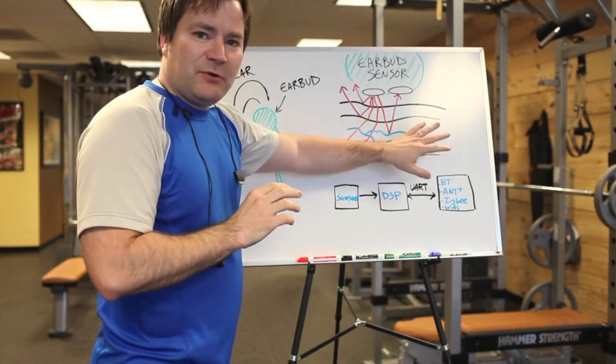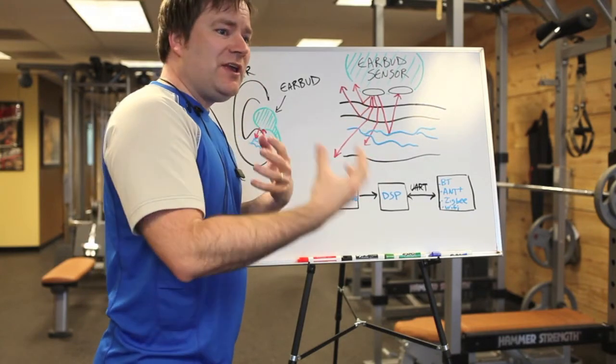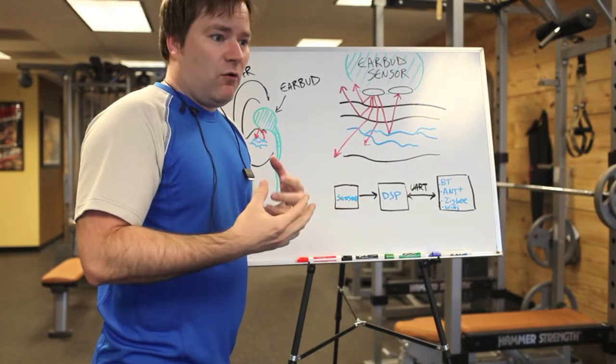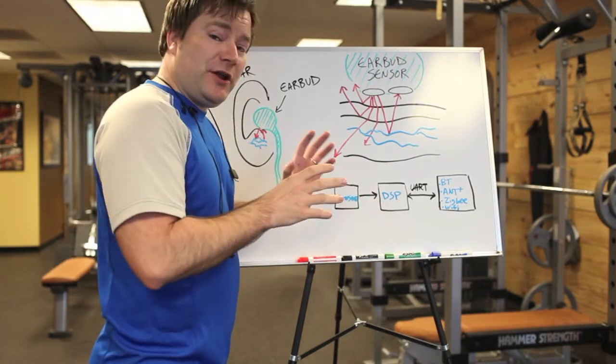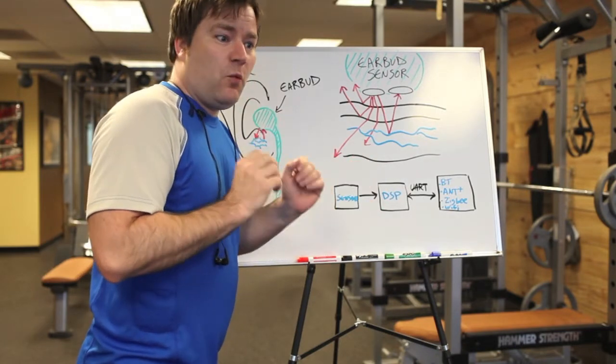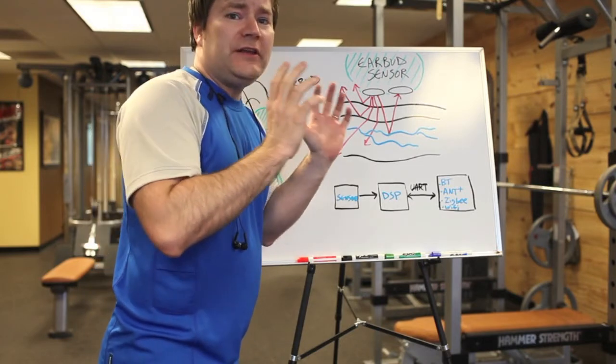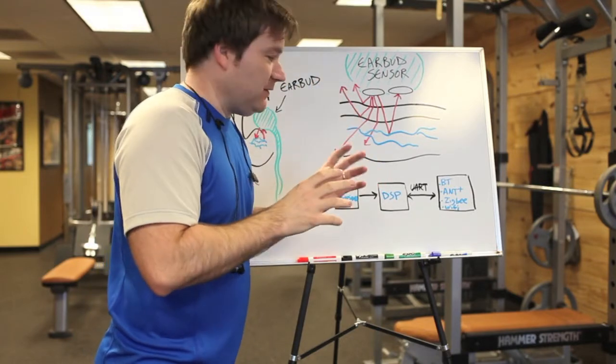But when people are moving, this becomes chaotic. And suddenly, you can't tell what's a heart rate or what's motion. And we figured out how to do that with people running really aggressively and doing really crazy things.